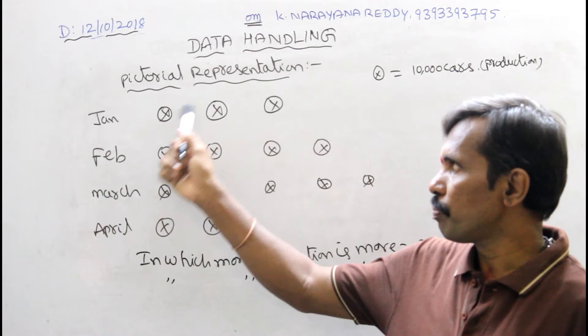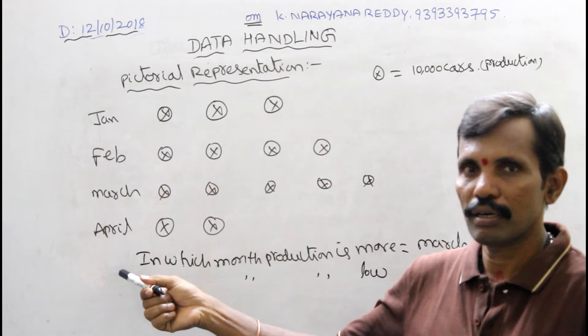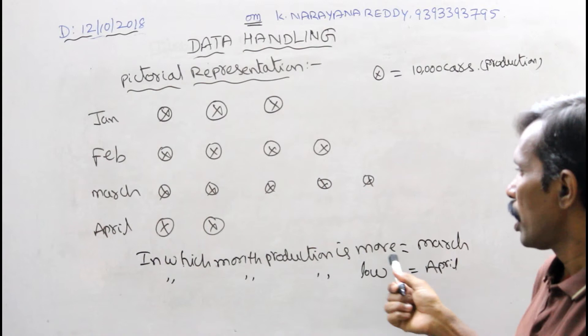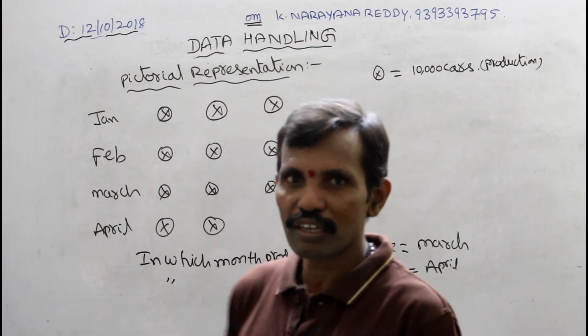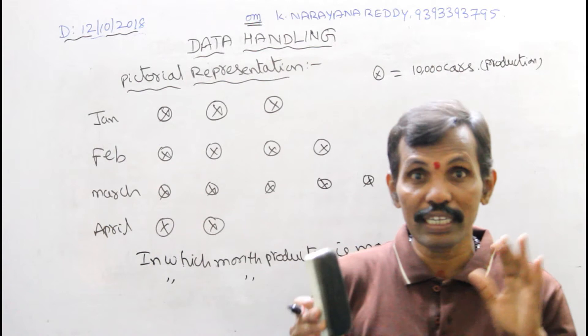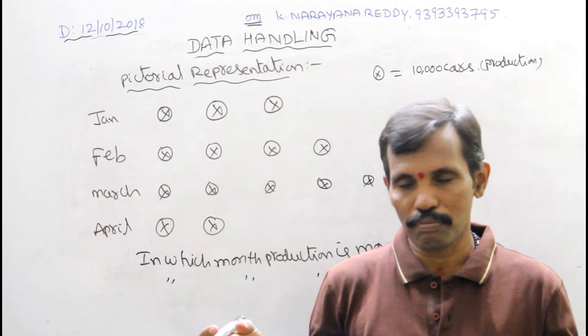This is called pictorial representation. How much production is happening during each month — January, February, March, April. In which month is maximum production happening? March. And low production? April. In this way, by using a graph or pictorial representation, you can find the data — maximum, minimum, or medium. This gives a very clear idea, and you can use pictorial representation or graph to get that clear idea.